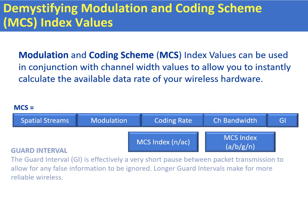And then finally the guard interval. The guard interval is effectively a short pause between packet transmissions to allow for any false information to be ignored. Longer guard intervals make for more reliable wireless. So let's take a look at a couple of the different MCS index types as a quick guide to give you an indication on the throughput.